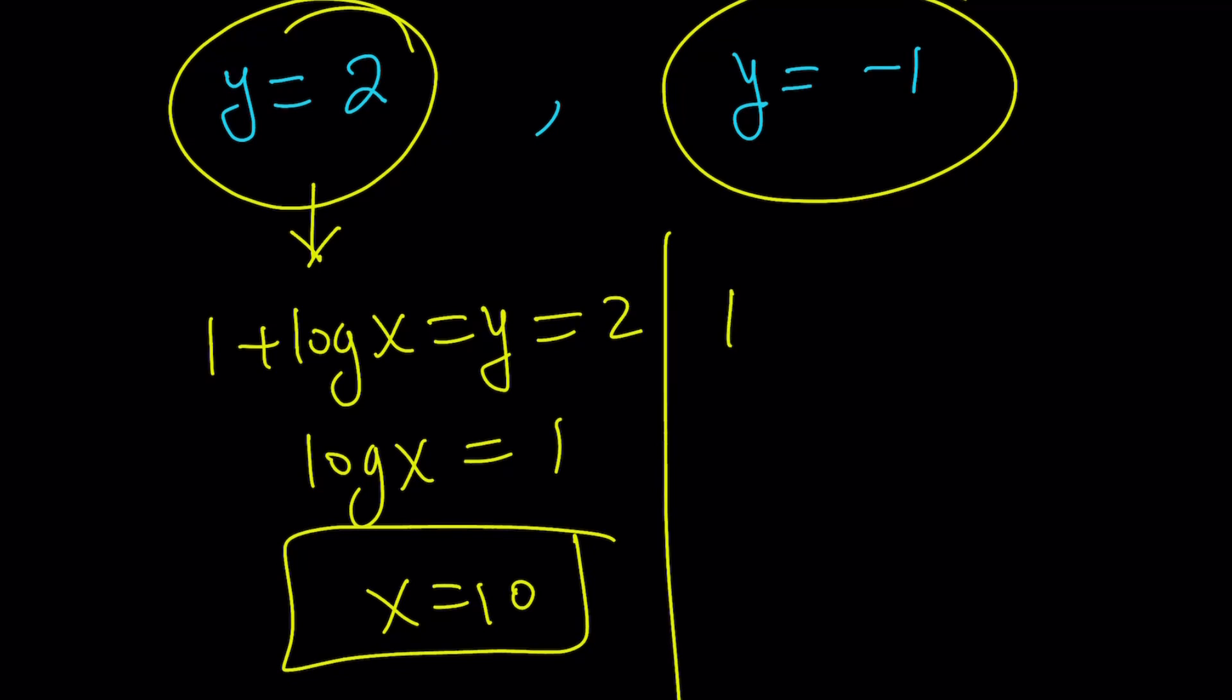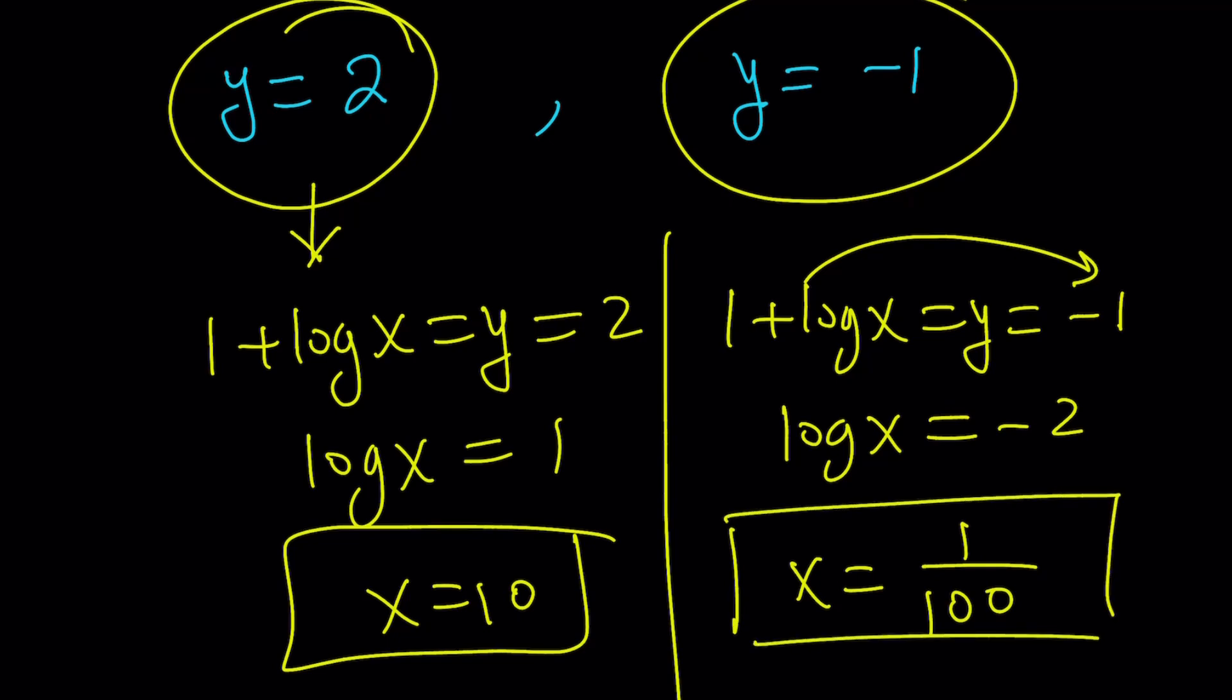Let's go ahead and take a look at the other one. 1 plus log x equals y, and that's negative 1. If 1 plus log x is negative 1, that means log x is negative 2. That means x is equal to 10 to the power of negative 2, which can be written as 1 over 100. So those are going to be the solutions. That's the end of the first method.